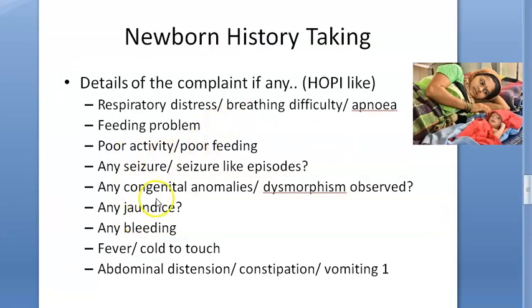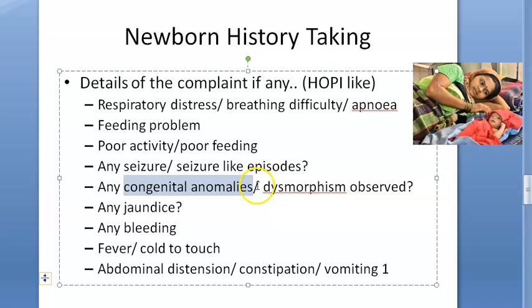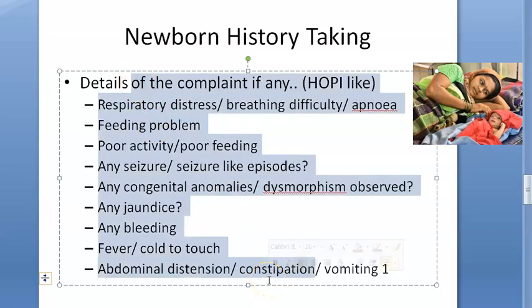So basically, look for all these, you know, if there is any respiratory distress, feeding problem, poor activity, seizure, any congenital anomalies are you seeing? Then jaundice, any bleeding, fever, cold to touch, abdominal distension, all this you have to look for. Constipation is a different word, but congenital anomalies and anomalies, there can be imperforate anus, etc. So it won't pass stools. So all this you have to look for. Anyways, that they would have done in neonatal, but as soon as it is born, the doctor will have to check all those.